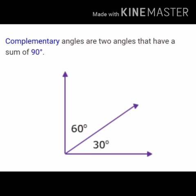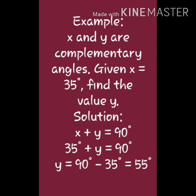We will study with the help of an example. X and Y are complementary angles. X is given as 35 degrees and we are asked to find Y. X plus Y is equal to 90 degrees. So 35 degrees plus Y equals 90 degrees, therefore Y equals 90 minus 35, which gives us 55 degrees. 35 degrees plus 55 degrees comes to 90 degrees, which is the complementary angle.